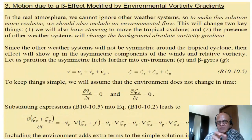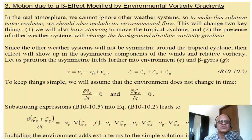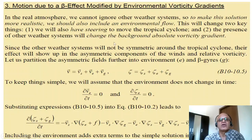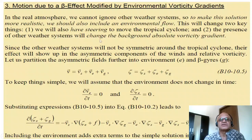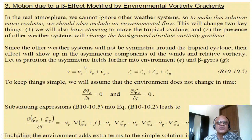The equations are always there, but the physics must be clear. The motion due to the beta effect modified by environmental vorticity gradients can then be addressed by adding an environmental component. In the real atmosphere we cannot ignore other weather systems, so to make the solution more realistic we include an environmental flow. This changes two key things: we will also have steering to move the tropical cyclone, and the presence of other weather systems will change the background absolute vorticity gradient.